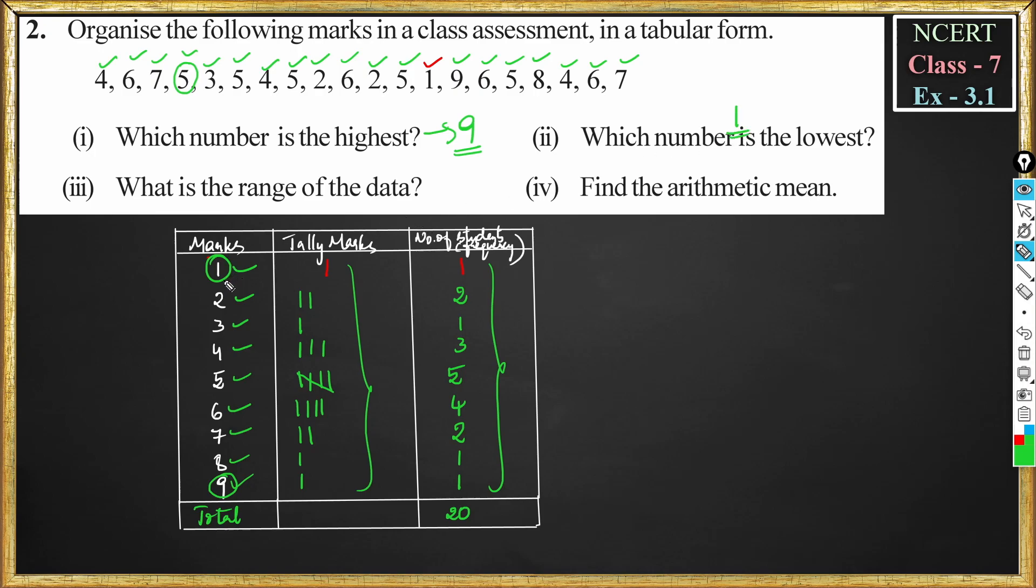So what is the range? Range of the data is highest minus lowest. That means 9 minus 1. So 9 minus 1 is 8. So 8 is the range of the data.